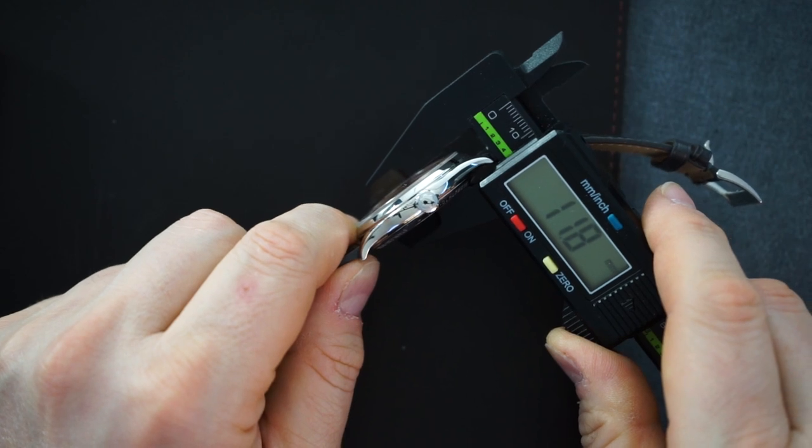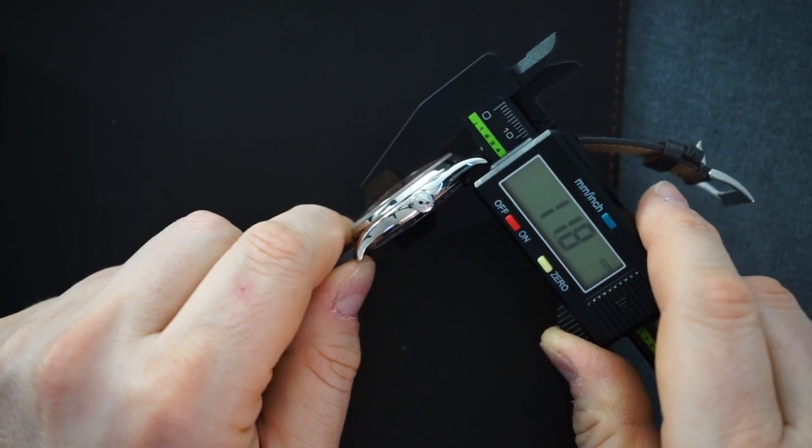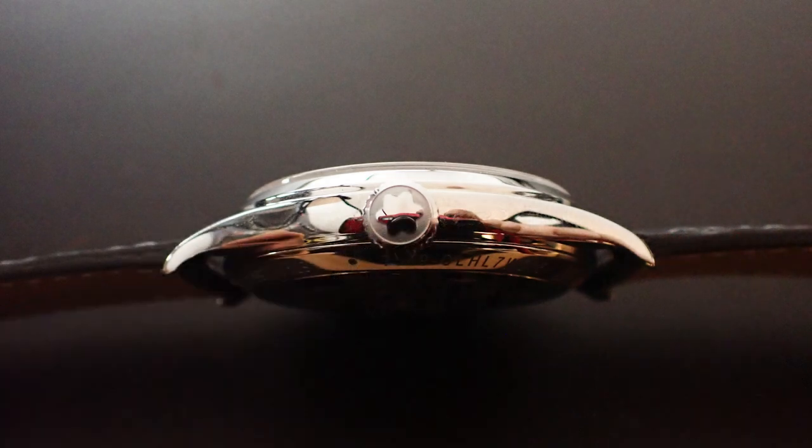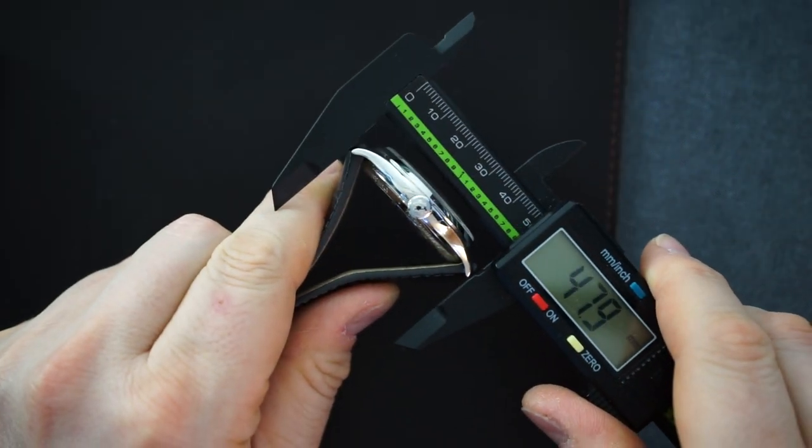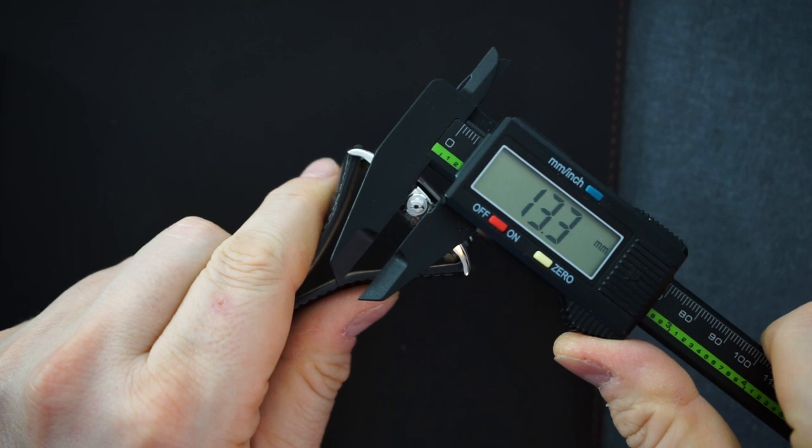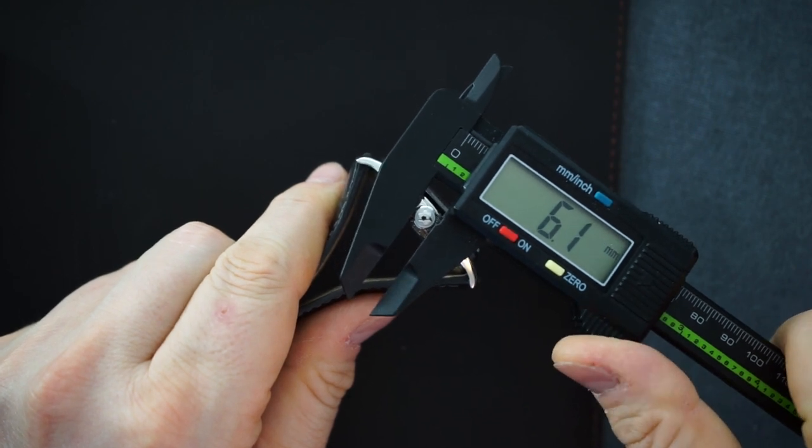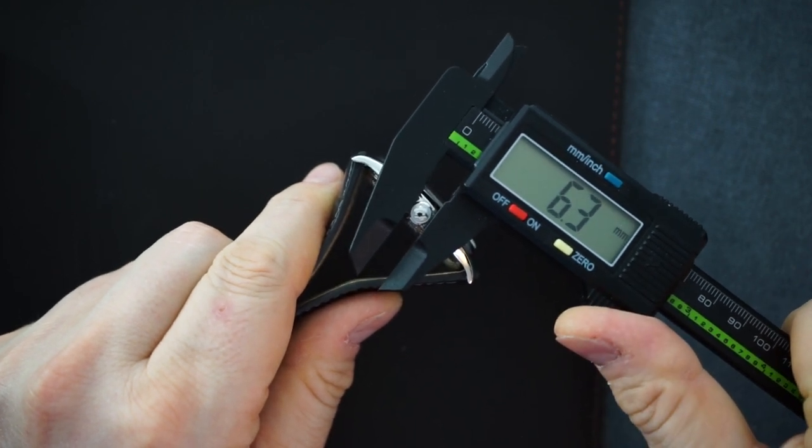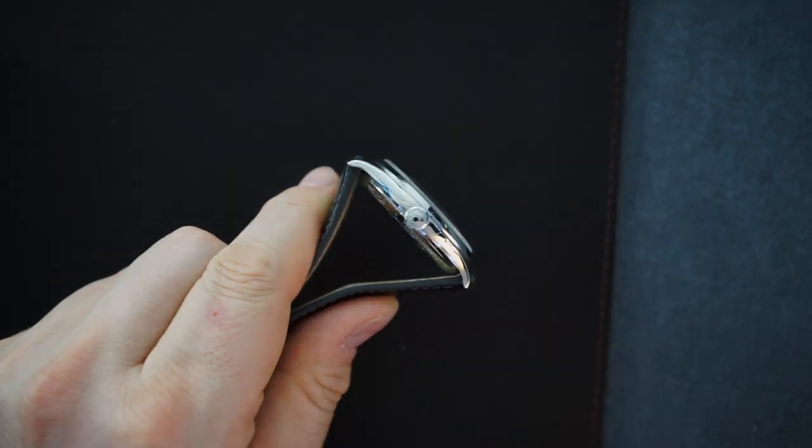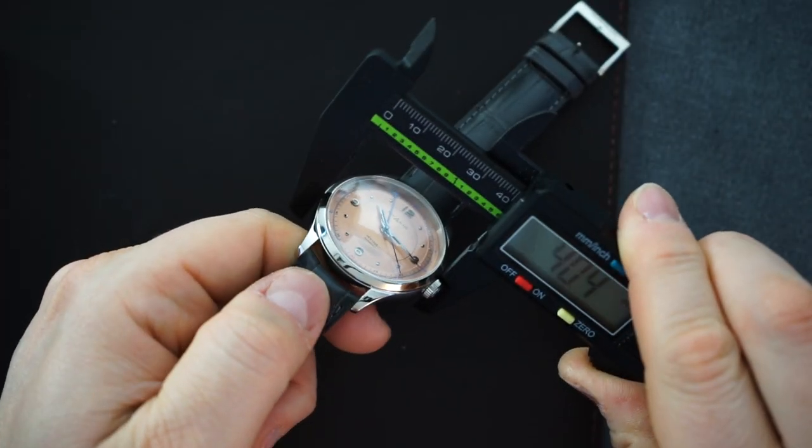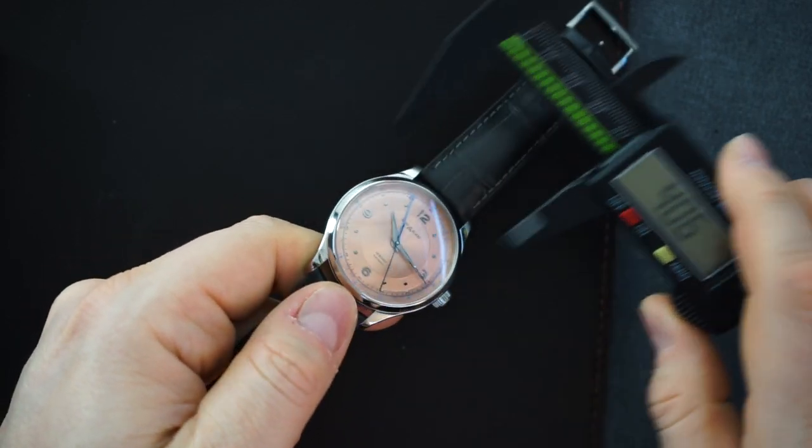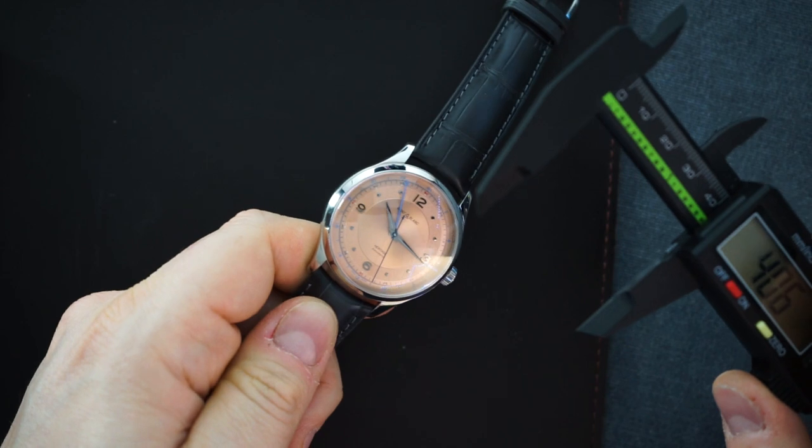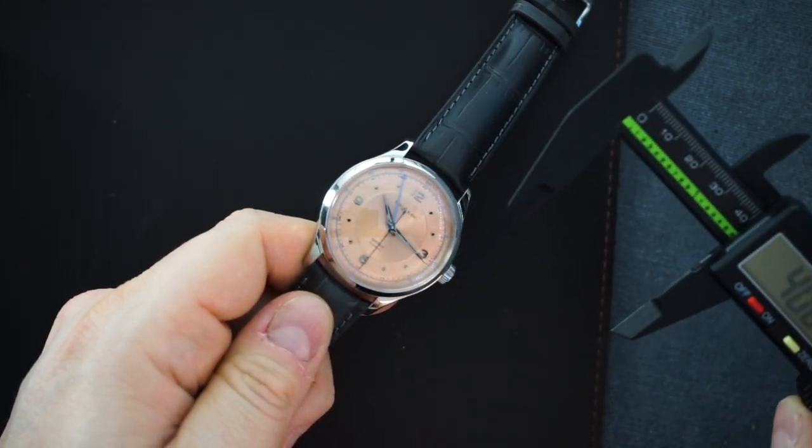Including the domed sapphire crystal, it is 11.8 millimeters thick, on the thinner side. It only has 50 meters of water resistance. The lug to lug is a decent 47.9 millimeters and the crown is pretty large at 6.3 which I'm glad to see. This is a 40.6 millimeter watch but it wears bigger than that because of the very thin bezel. The entire watch is essentially polished, very vintage inspired with an entirely polished case.